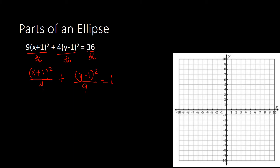Now identifying the orientation: if you look at the denominators, we have 4 and 9. Since 9 is the bigger denominator and it is under (y minus 1) squared, the orientation is vertical. Next, we identify our center: we have (x plus 1), so x of center is negative 1, and (y minus 1), so y of center is positive 1. Center is at (negative 1, 1).